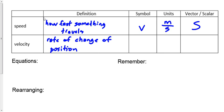What's the symbol for velocity? It's going to be V with an arrow over it. Units? Meters per second — though you can sometimes use kilometers per hour or millimeters per hour; the standard units are meters per second. Vector or scalar? It's a vector — the arrow is up on the board.